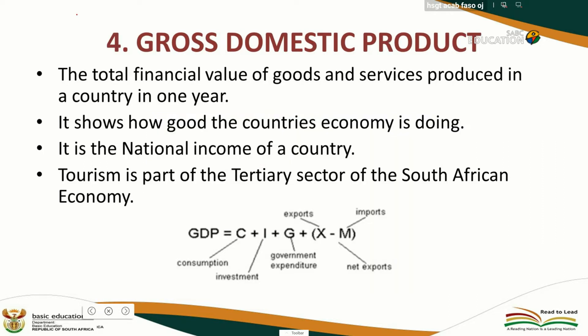The gross domestic product is the total financial value of goods and services produced in a country in one year. Basically, it is the income of the country.